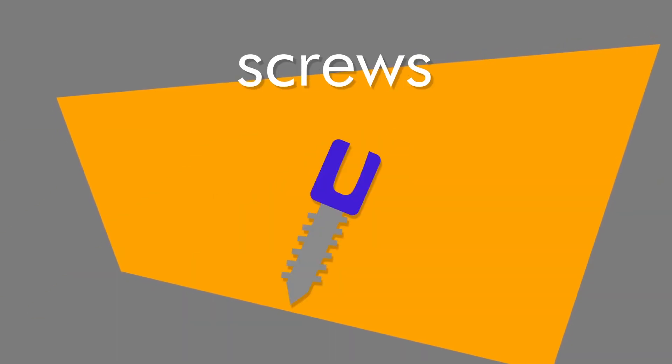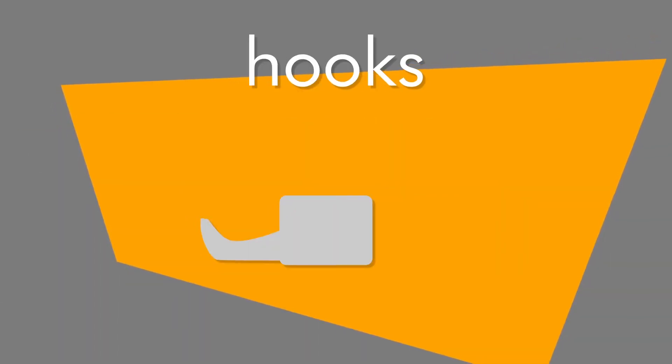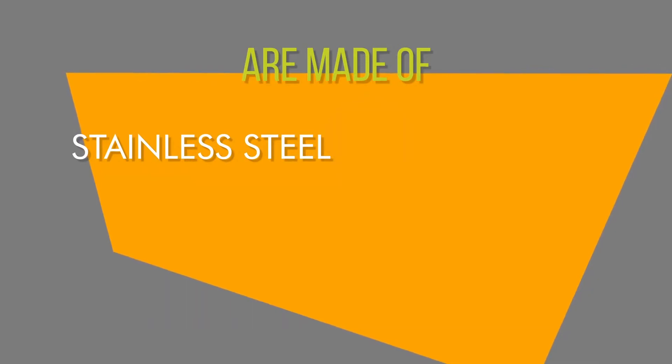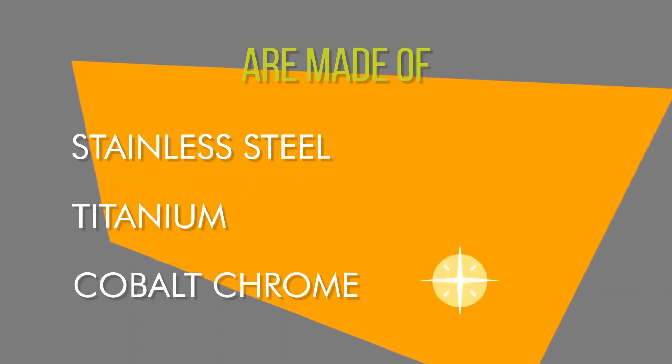implants - generally rods, screws, wires, and/or hooks made of stainless steel, titanium, or cobalt chrome - are attached to the vertebrae at the section of the spine that is curved.